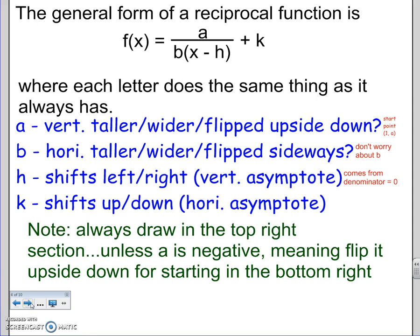Alright, there's a general form. That's what it looks like. Each letter does the same thing that's always done. a is vertically taller or wider, and then flipped upside down or not. If you want to be technical, which I'm not going to worry too much about, you do start at the point one comma a. But we have our calculator, so I just need you to know which part does the graph go on and where the restrictions or asymptotes are.